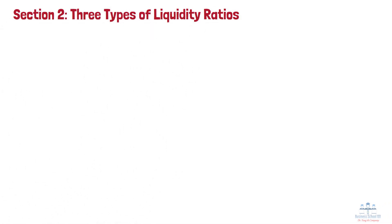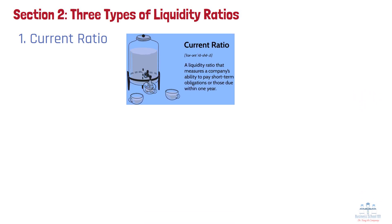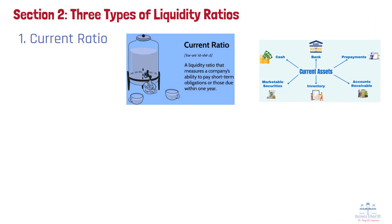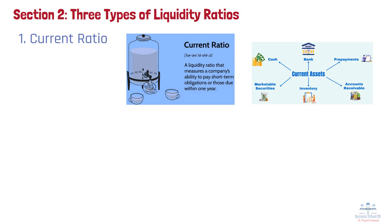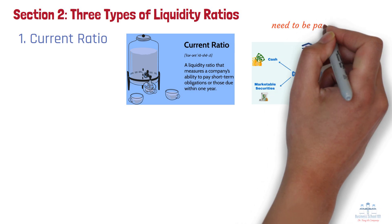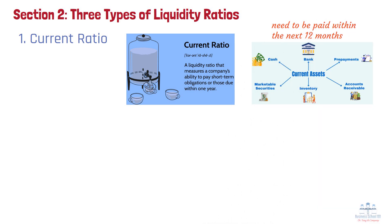Let's explore three main liquidity ratios in detail. Number 1: Current Ratio. The current ratio is one of the most widely used liquidity ratios because it gives a broad overview of a company's ability to cover its short-term liabilities with its current assets. Current assets include cash, accounts receivable, and inventory, while current liabilities refer to obligations that need to be paid within the next 12 months, such as short-term loans, accounts payable, and taxes.